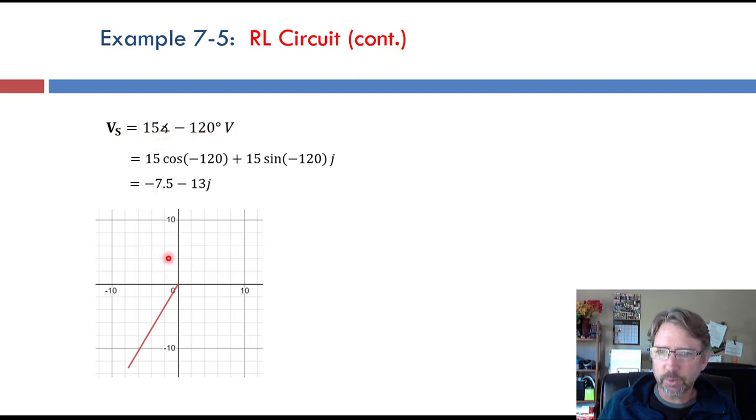And it has a rectangular form too, which we can use the equations that we've seen in the last two lectures, or this triangle, to find the real part is here, negative 7.5, and the imaginary part is down here, negative 13.